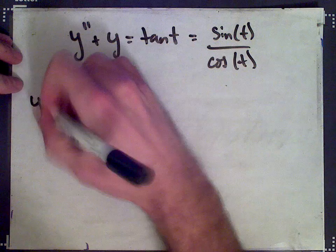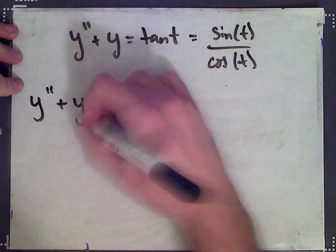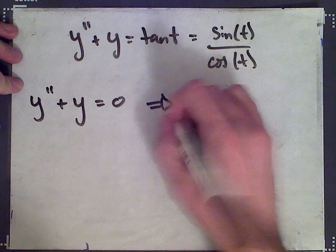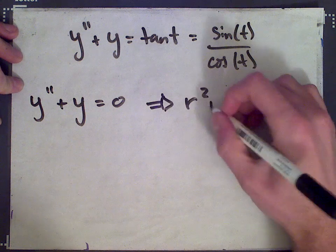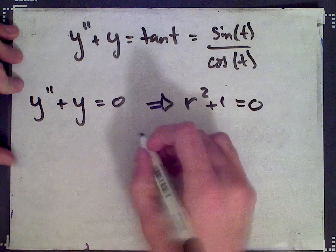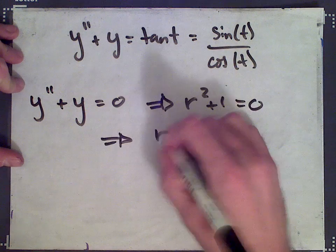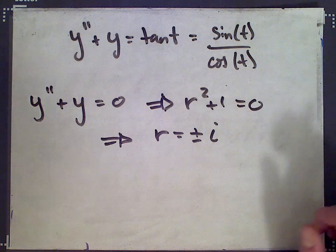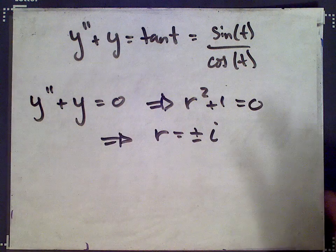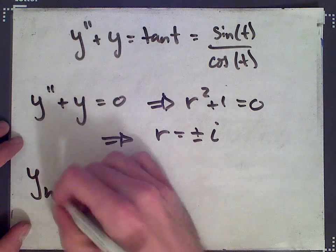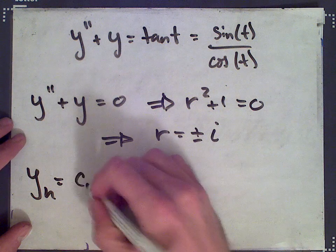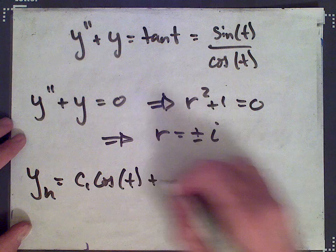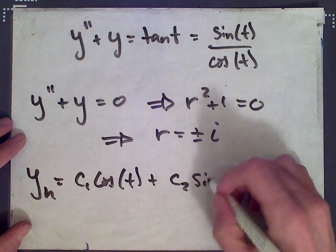First let's solve the homogeneous equation: y double prime plus y equals zero. We get the characteristic equation r squared plus one equals zero. Solving for the roots, we get r equals plus or minus i. So the homogeneous solution is c1 cos t plus c2 sine t.